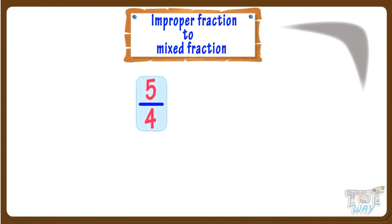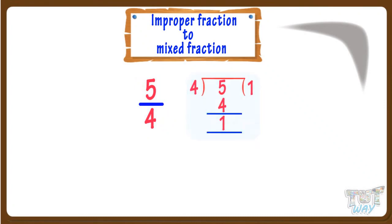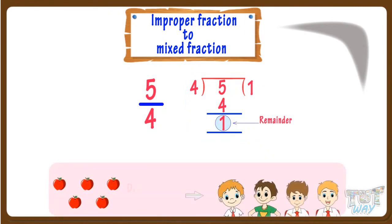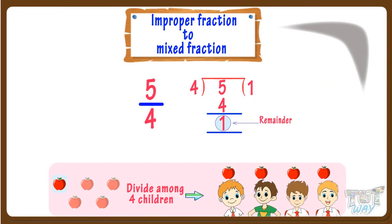Here we have an improper fraction 5 by 4. Now let's see how it can be converted to a mixed fraction. If we divide 5 with 4, we get 1 as quotient and 1 as remainder. This means suppose we have to distribute 5 apples among 4 children — each child will get 1 whole apple and 1 apple will again be divided among 4 children.